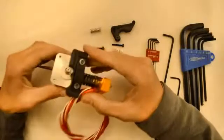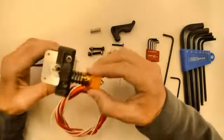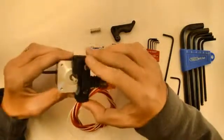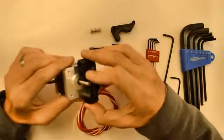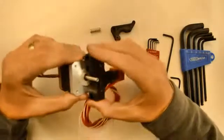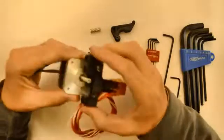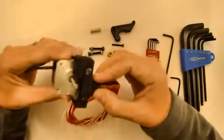So at this point your extruder looks like this. Your hotend is nicely clamped into the printed components, and the printed components are fixed to the stepper motor with those 2 screws. And there is no play between them.